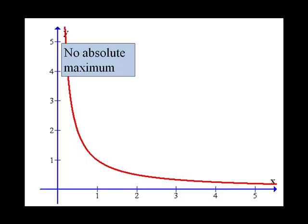We see that there is no absolute maximum because this graph just continues to grow without bound as we get closer and closer to 0. We have a vertical asymptote there.